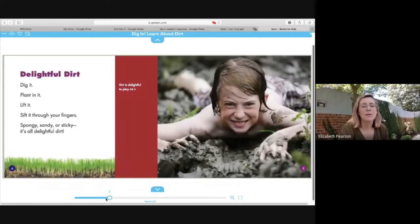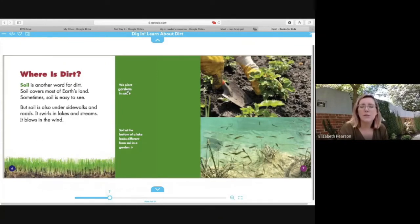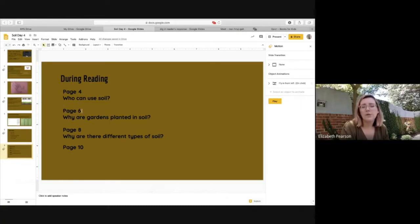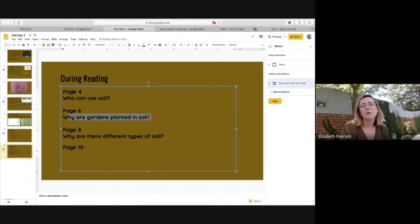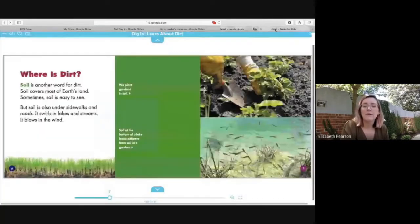Let's go back to our page and let's read the captions to describe what we're seeing in each picture. The first caption says, we plant gardens in soil. And the next caption says, soil at the bottom of a lake looks different from soil in a garden. So look at this soil here at the bottom of a lake. And look at this soil here in the garden. Do they look the same or do they look different? They look different. They definitely are a different color, that's for sure. So here on page six my question was, why are gardens planted in soil? So why do we use soil to plant gardens and not other things?